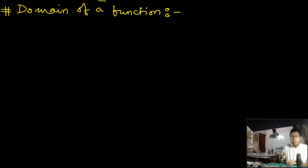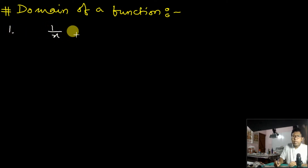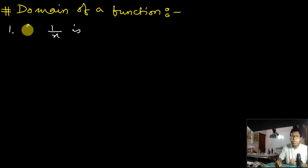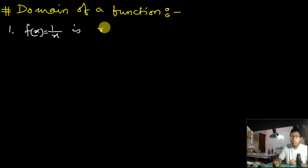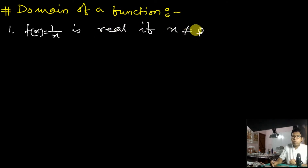The first trick is you should remember that 1/x is real — that means the output of 1/x, because you know this is a function. f(x) = 1/x, and this 1/x is real if x is not equal to 0. This is very important.